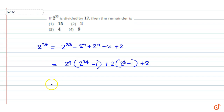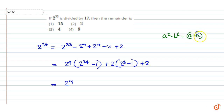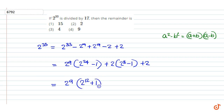This can be written as 2 to the power 9 into, and this can be factored using the identity A squared minus B squared equals A plus B into A minus B. Here A is equal to 2 to the power 12 and B is equal to 1. Then we can write this expression as 2 to the power 12 plus 1 into 2 to the power 12 minus 1.